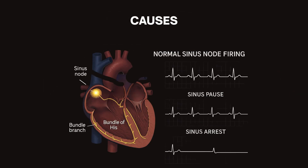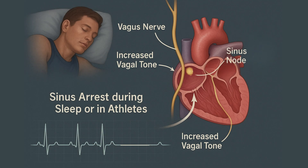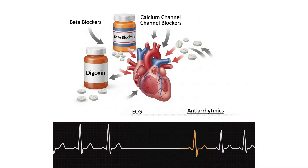It suggests the sinus node failed completely and the heart had to restart on a new rhythm or rely on an escape beat. Now, the big question — why does this happen? There are a few common causes. First, increased vagal tone. This happens often during sleep or in well-trained athletes. The vagus nerve slows the sinus node, sometimes to the point where it pauses. Second, medications — drugs like beta blockers, calcium channel blockers, digoxin, and some antiarrhythmics can suppress the sinus node and cause pauses or arrest.